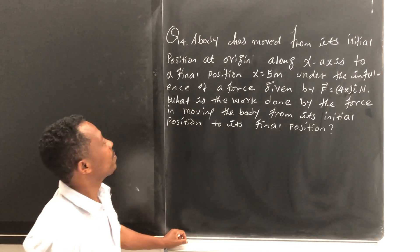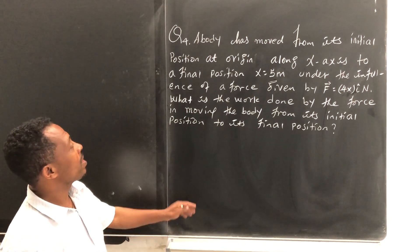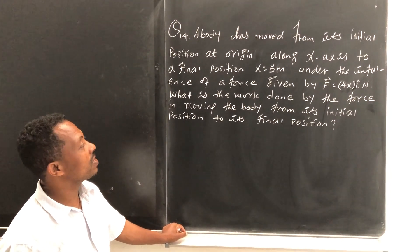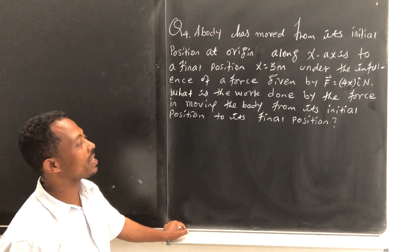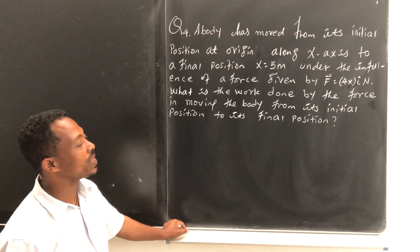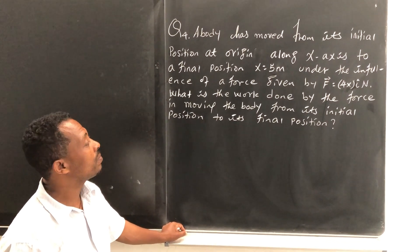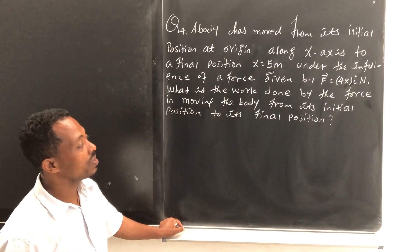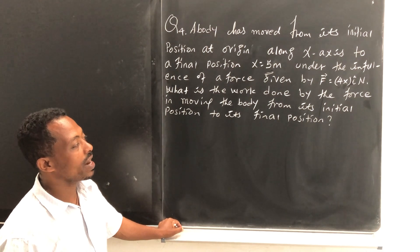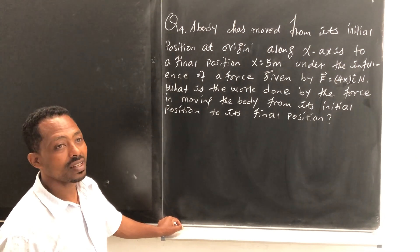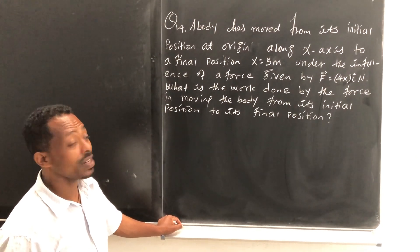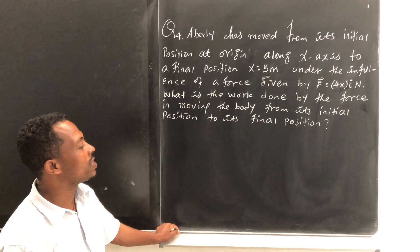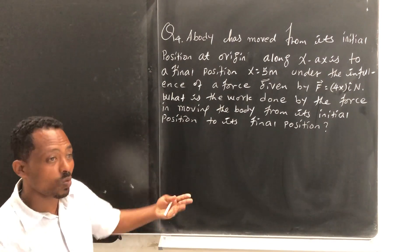Look, the problem says a body has moved from its initial position at origin along X axis to a final position X equals 5 meters under the influence of a force given by F equals 4X along i direction in Newton. What is the work done by the force in moving the body from its initial position to its final position?